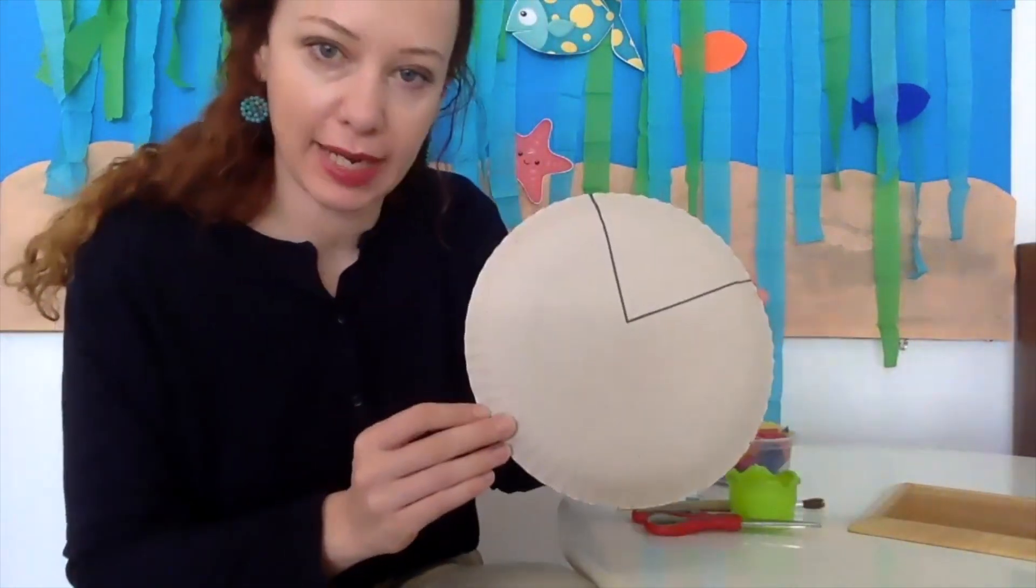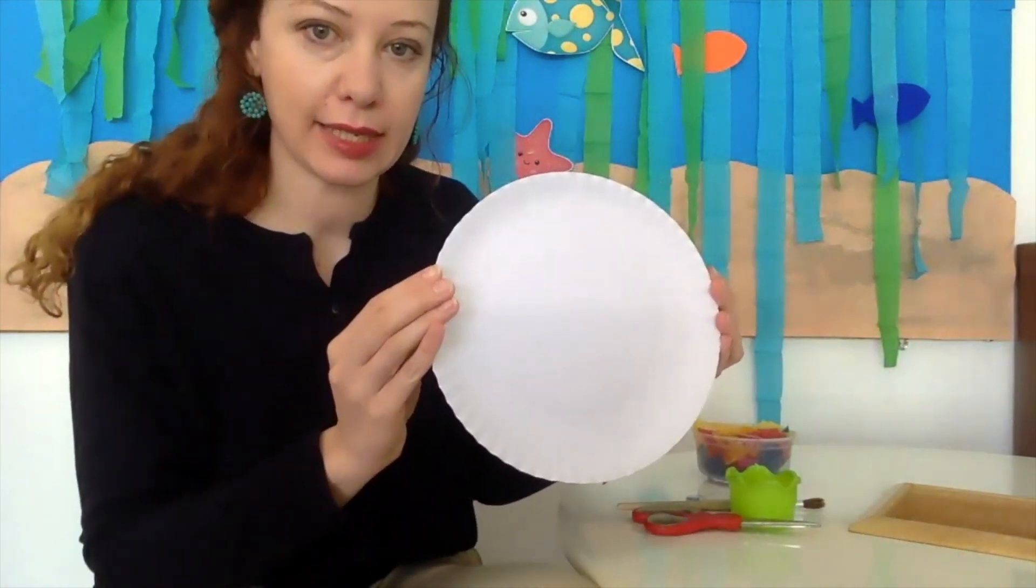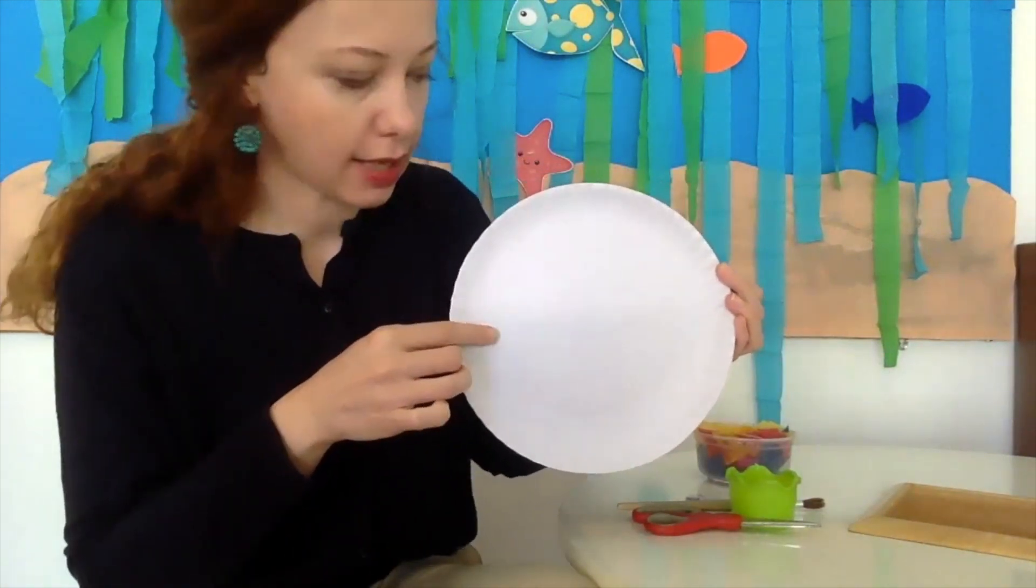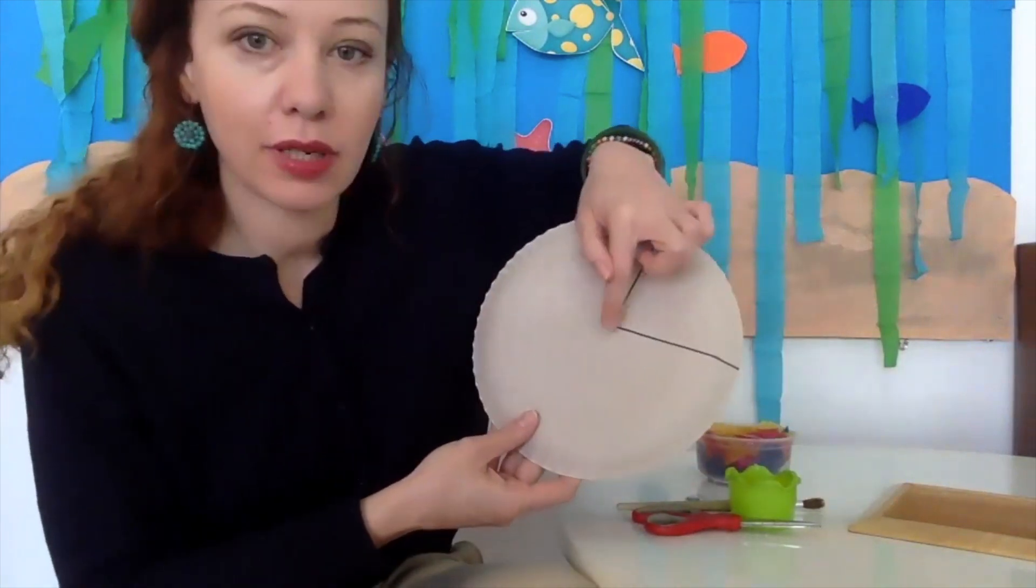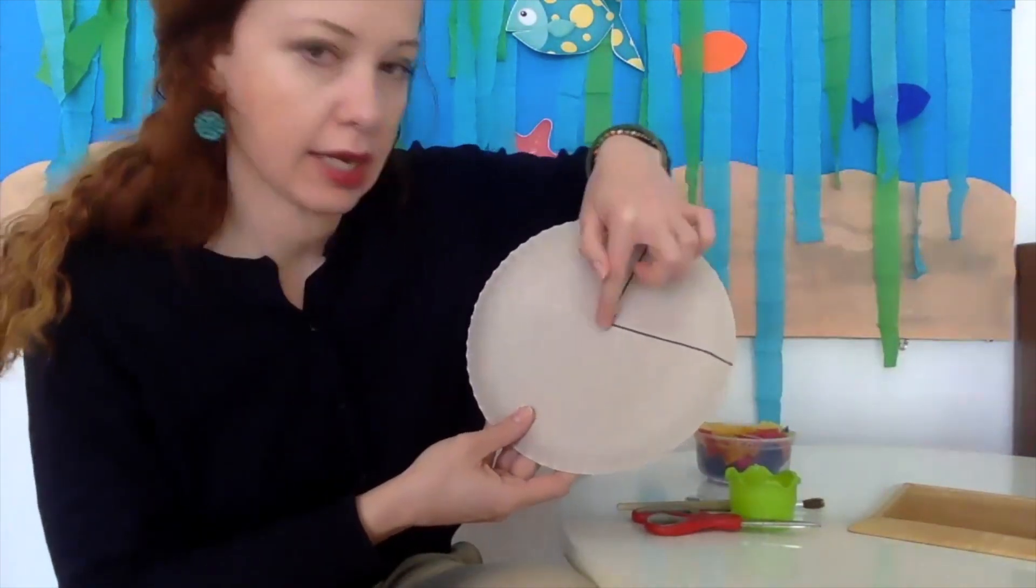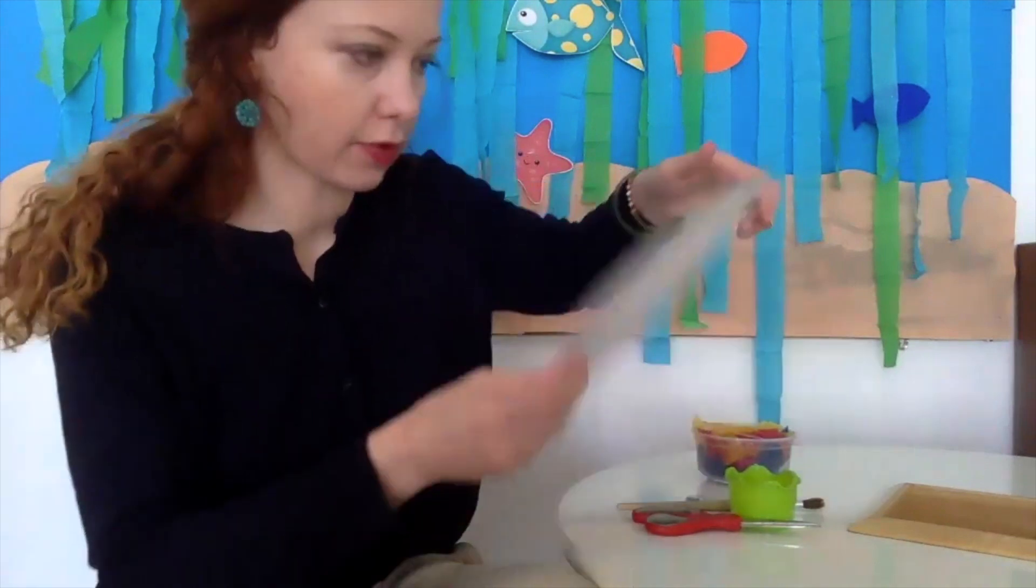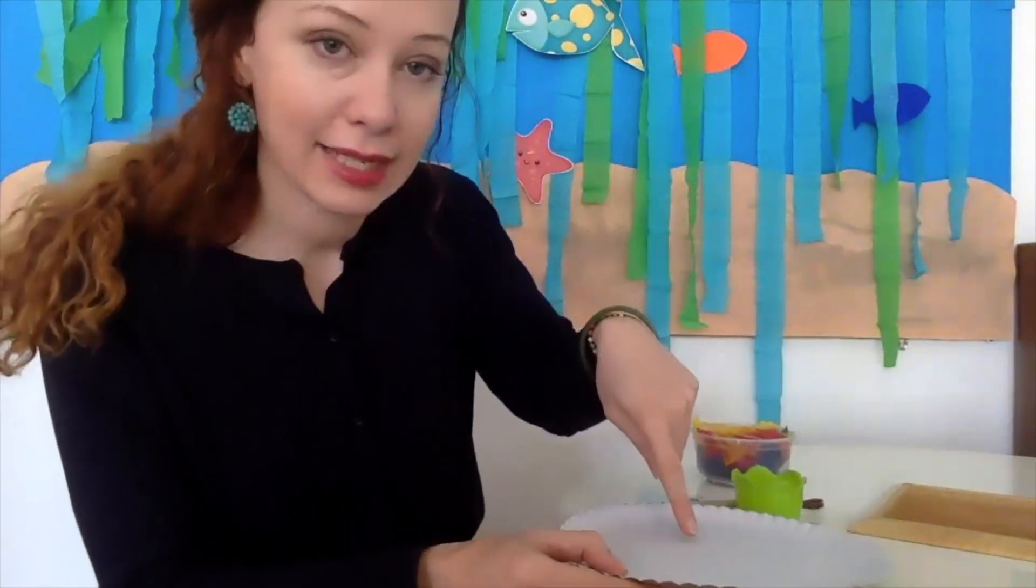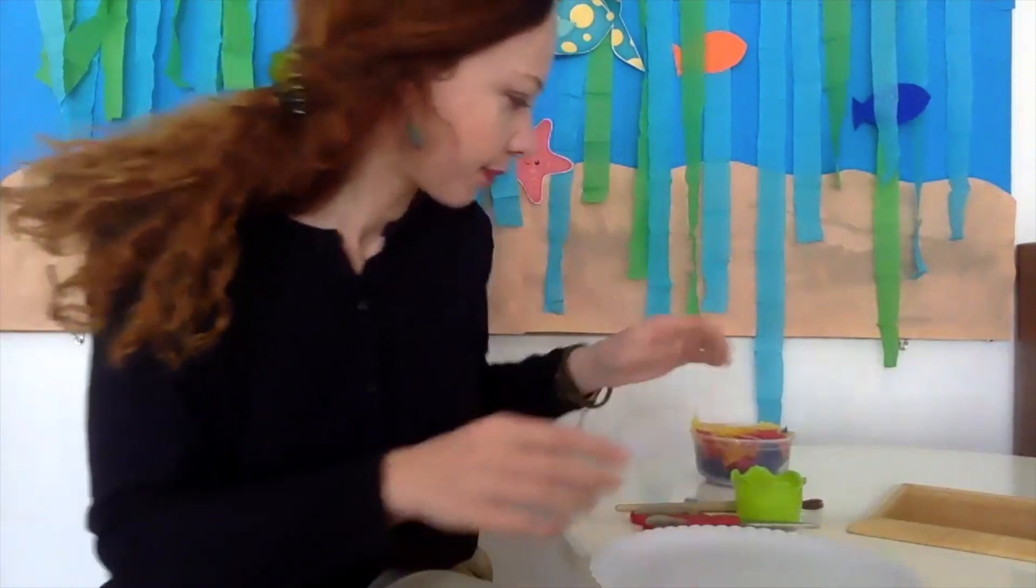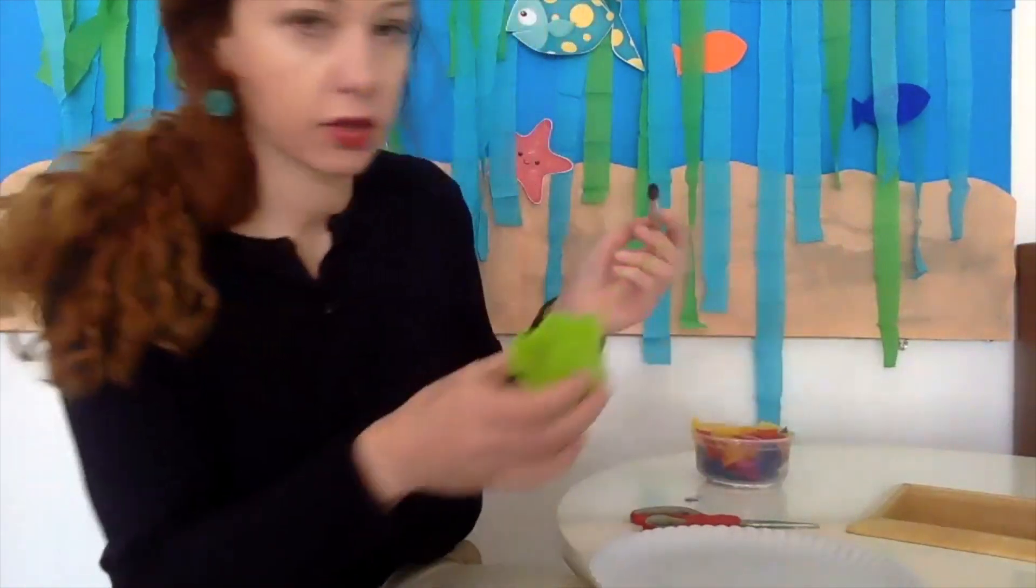In your package you'll see that you have a paper plate that looks like this—white on one side and on the other side it has a triangle outlined. Leave that for now and turn it so the white side is facing up.